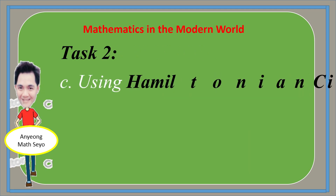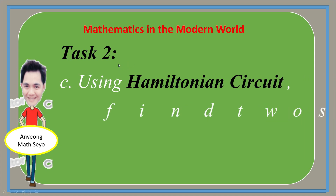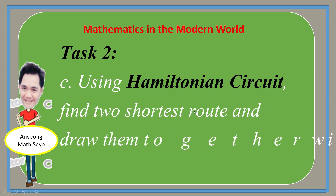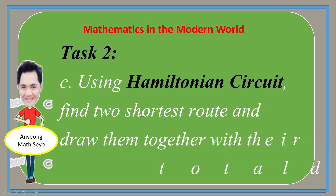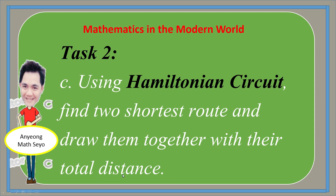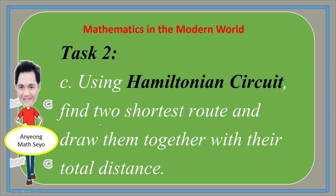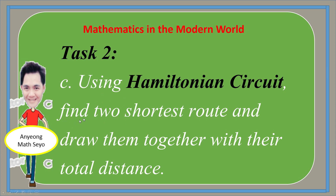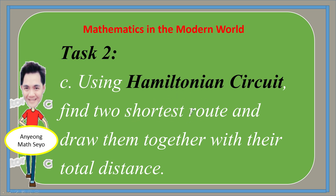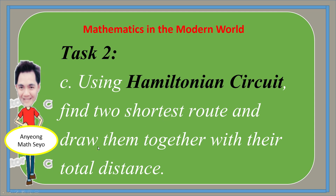For Letter C under Task 2, using Hamiltonian circuit, find the two shortest routes or the fastest ways, and draw them together with their total distance. An example will be shown, and that will be your basis. Find the two shortest routes — the two fastest ways to visit all the places — then draw them with their total distance.